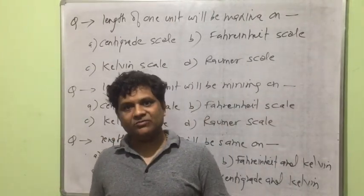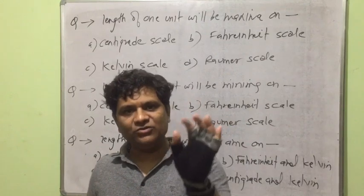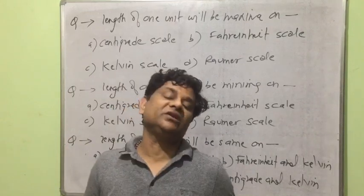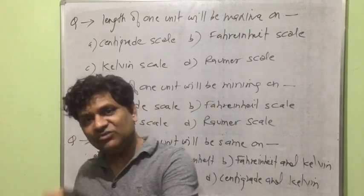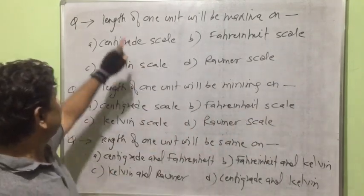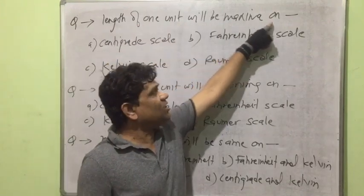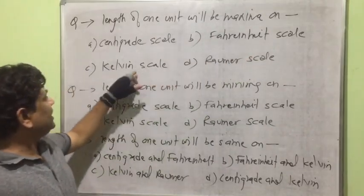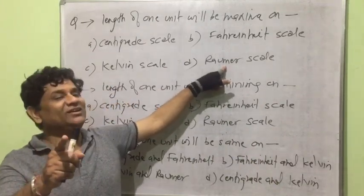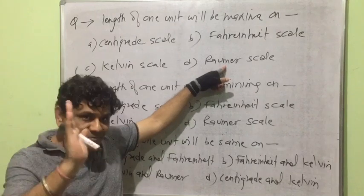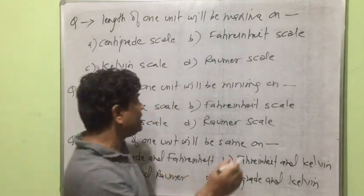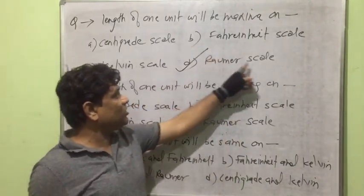In lecture number one, we discussed that the length of one unit on the Réaumur scale is more than the length of one unit on the centigrade scale. The length of one unit on the centigrade scale equals the length of one unit on the Kelvin scale. The length of one unit on the Kelvin scale is more than one unit on the Fahrenheit scale. So among these four scales, the length of one unit is maximum on the Réaumur scale, because it has the minimum fundamental interval — the minimum number of divisions in the same length.